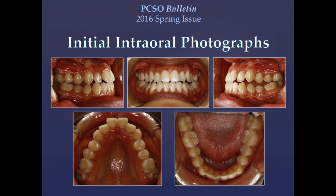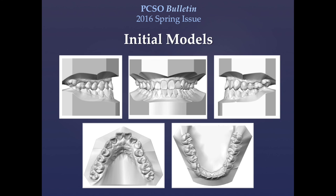Intraorally, she has bilateral class 3 molar and canine relationships with lateral open bites. There is approximately 4 millimeters of crowding in the tapered maxillary arch with only 2 millimeters of crowding in the mandibular arch. Her central incisors have 1 millimeter of overbite with 1.5 millimeters of overjet, whereas her maxillary lateral incisors and premolars are in crossbite. The mandibular dental midline is deviated 1 millimeter to the right of the maxillary. The maxillary second molars are flared buccally and the mandibular posterior teeth are lingually inclined, with lateral open bites and a deep mandibular curve of Spee.